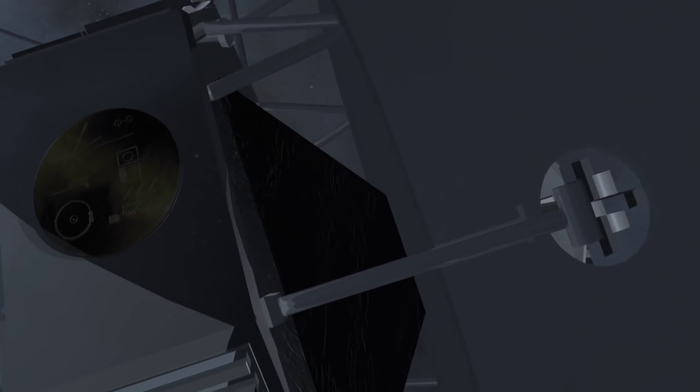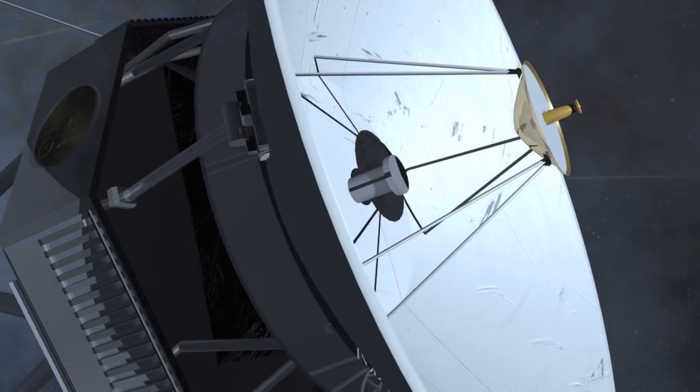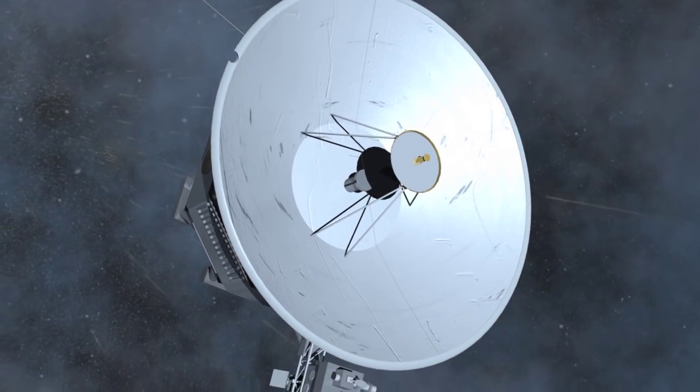The two Voyager spacecraft have been traveling away from Earth for more than 33 years, and they are finally in the outer edge of the solar system.